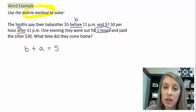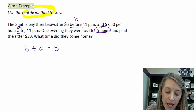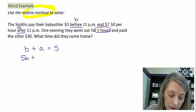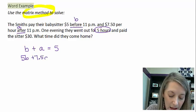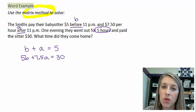So that's my first equation goes by the number of hours. The second equation is by pay. So I know it's $5 before 11, $7.50 after 11, and we know that the total amount is $30.